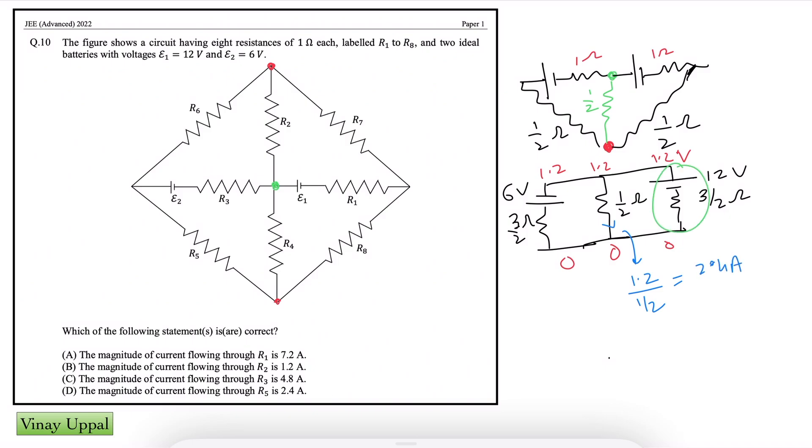How much is the right branch? I can simply write 12 minus 3 by 2I, E minus IR should be equal to 1.2. So how much is the value of I? 12 minus 1.2, 10.8 divided by 3, 3.6 into 2, 7.2. So 7.2A.